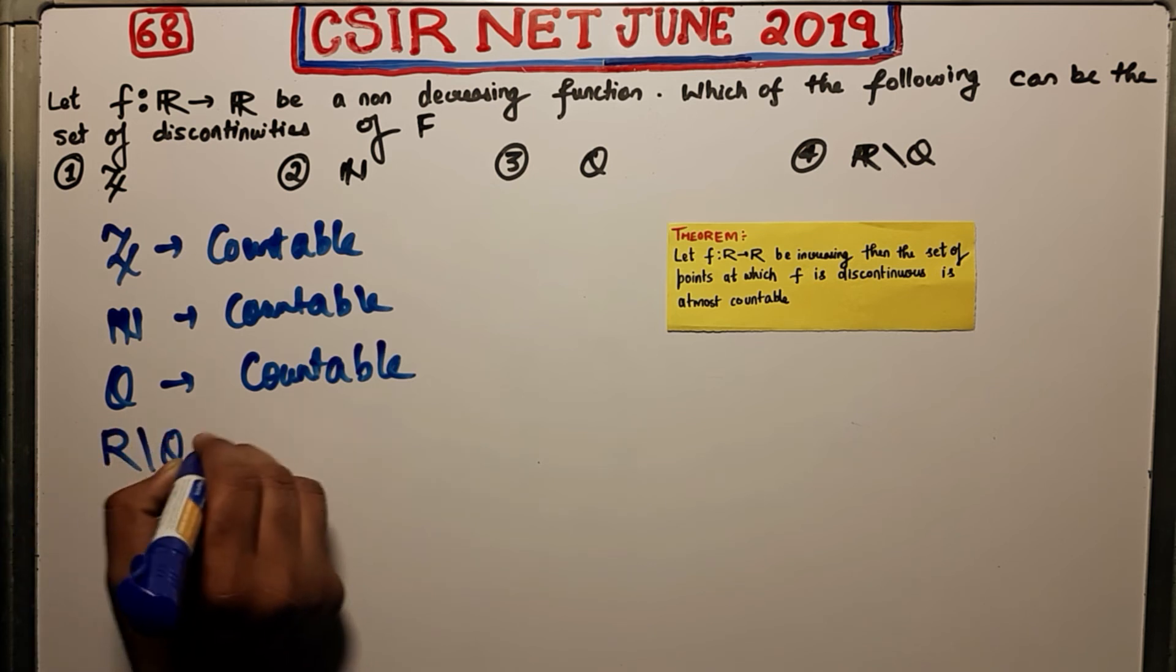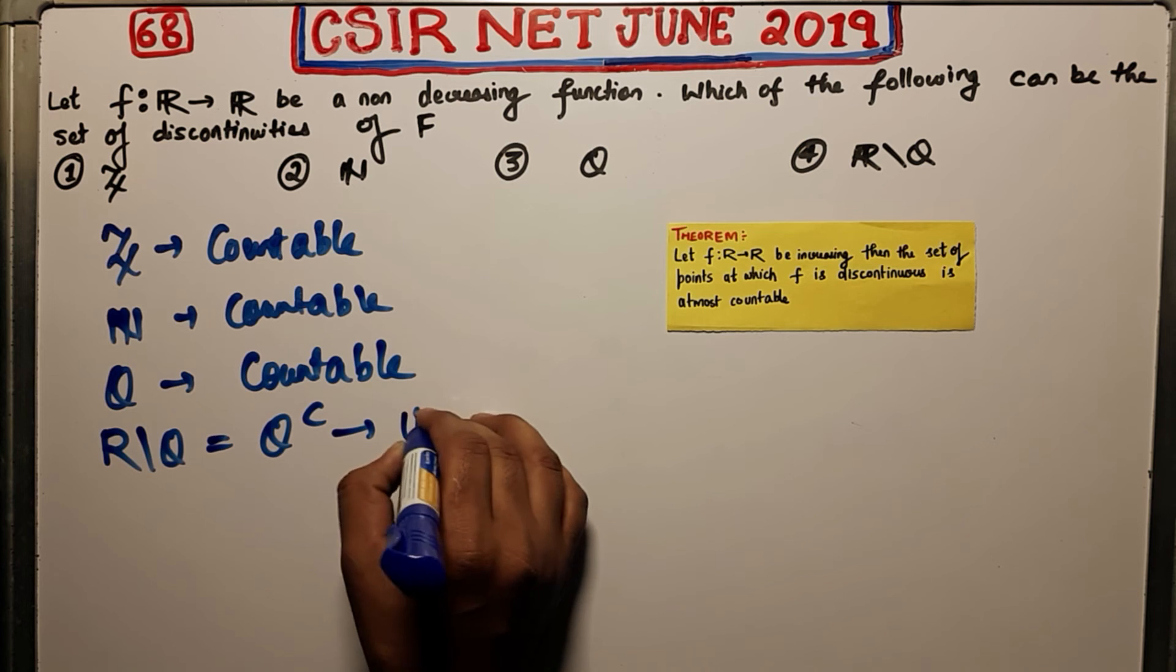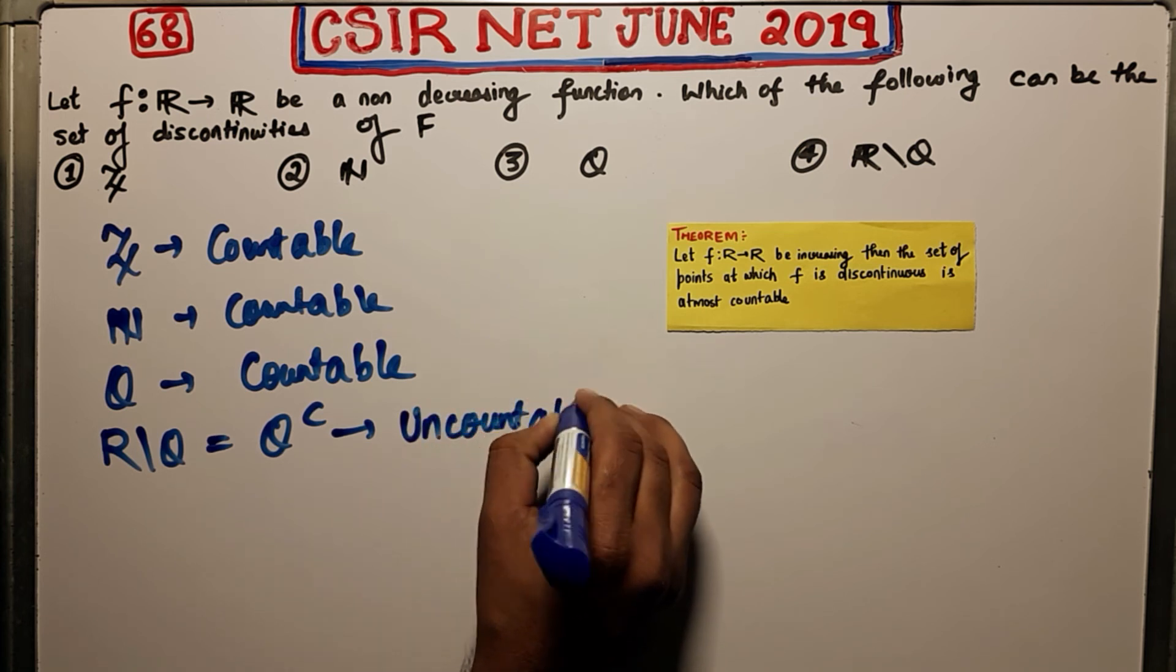But R by Q, that means Q complement, that is the set of irrationals, is uncountable. This is what you know.